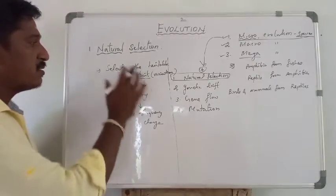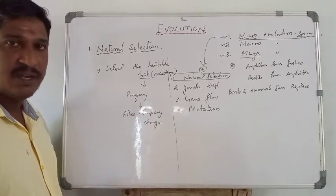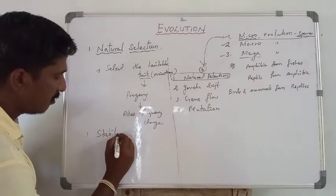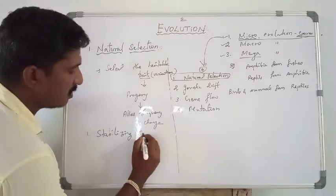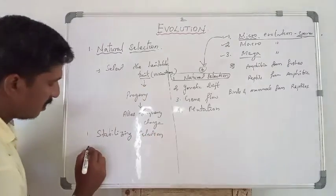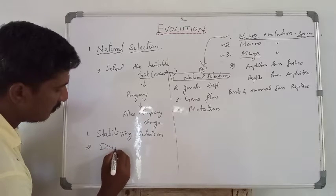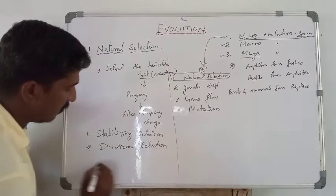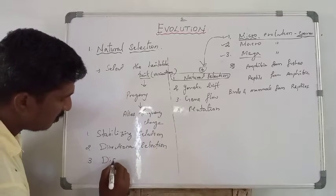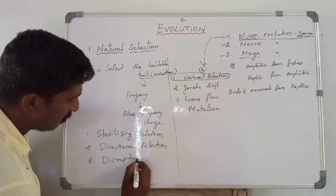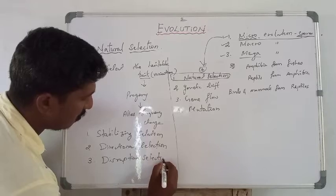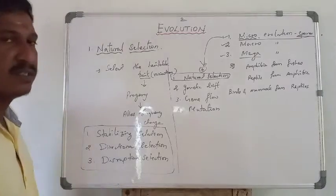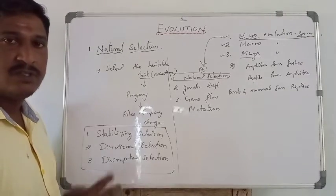Natural selection has three types. The first one is stabilizing selection, the second one is directional selection, and the third one is disruptive selection. These are all three types of selection in natural selection. Now we are going to see them one by one.